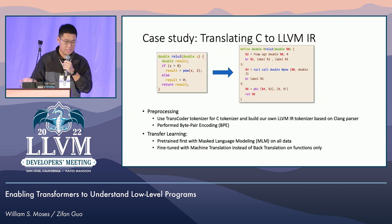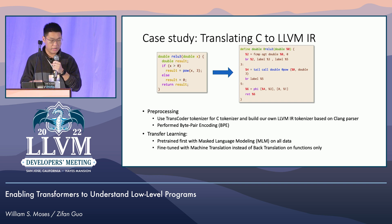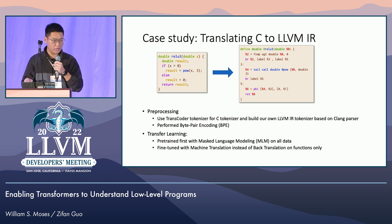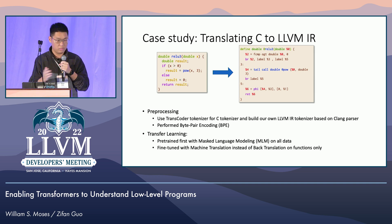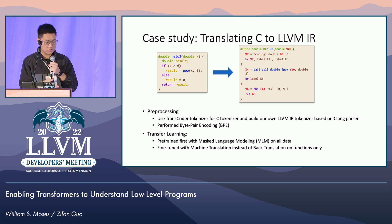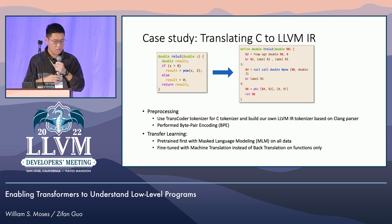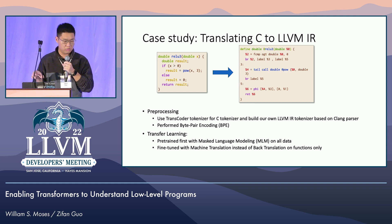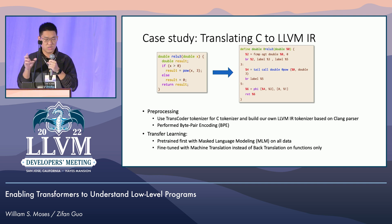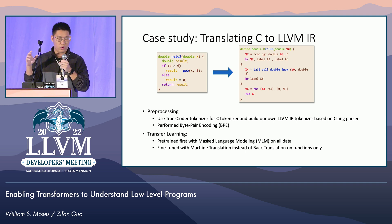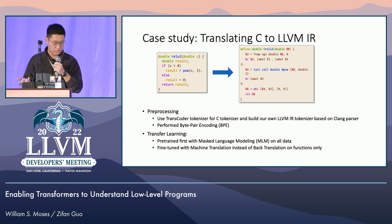We conducted a case study which is translating C to LLVM IR. We start this process by pre-processing, using C tokenizers from other mature and successful work called Transcoder. Then we built our own LLVM IR tokenizer based on Clang parsers. And we perform byte-pair encoding on it, which essentially splits words into subwords because we want a smaller vocabulary that is better for machine learning.